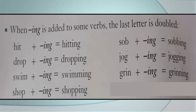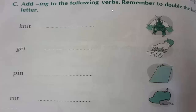'Sob' means cry noisily. Look at b consonant, o vowel, s consonant, so last b will be doubled and add ing. 'Jog' means run at a steady gentle pace. G consonant, o vowel, j consonant, so last g will be doubled and add ing — jogging. Jogging is a part of exercise, isn't it? 'Grin' means smile broadly — in Bengali 'naad berkore hasha'. N consonant, i vowel, r consonant, so last n will be doubled and add ing — grinning.